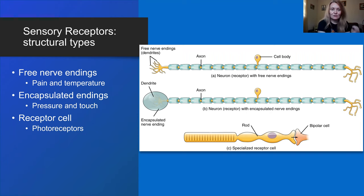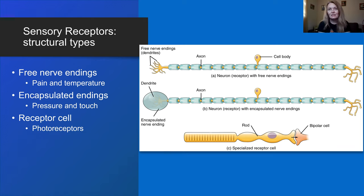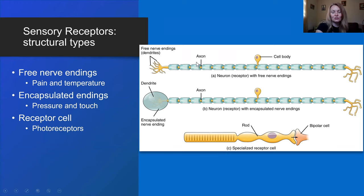We're covering the somatic sensory division, which means we will talk about sensation that reaches your cerebral cortex and you will understand this sensation. Before that, you need a receptor — a sensory receptor that senses the change and sends an electrical impulse towards your brain. Receptors can be free nerve endings, as shown on the diagram.